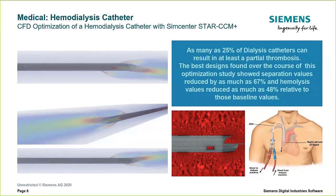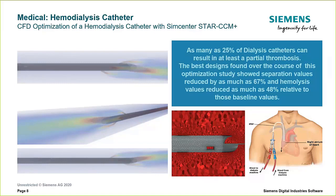Today we'll look at simulations of this optimized catheter design placed within a range of virtual patients, each with slightly different anatomies, to see how the catheter performs in its intended environment — accounting for patient variability. We'll also illustrate how simulation assesses operational variability, since catheters aren't always placed in exactly the same position. It's a good time to turn it over to Julian, who will discuss how Materialise develops virtual patients.